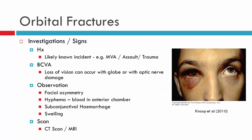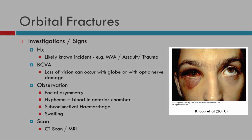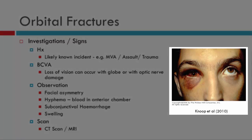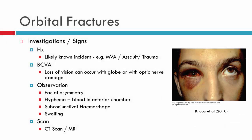Patients with an orbital fracture will present with a known incident that resulted in the fracture — for example, a motor vehicle accident or an assault. Visual acuity must be checked in all patients, as it can be reduced due to damage to the globe or the optic nerve. You also want to observe facial symmetry, look for hyphaema, subconjunctival hemorrhaging, and swelling. These patients will require a CT scan.